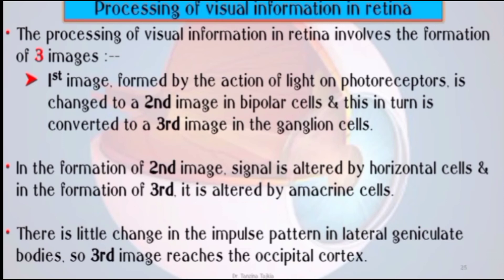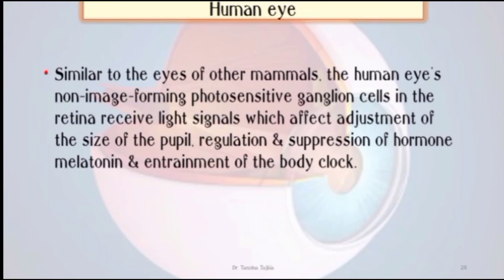In image formation, three images are formed. The first image is formed by the action of light on photoreceptors, which is changed into a second image in bipolar cells, which is then converted into a third image in ganglion cells. In the formation of the second image, signals are altered by horizontal cells, and in the formation of the third image, signals are altered by amacrine cells. There is little change in the impulse pattern in the lateral geniculate bodies, so the third image reaches the occipital cortex.